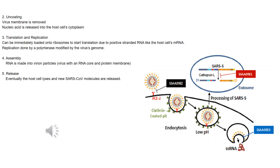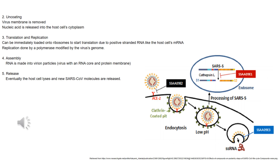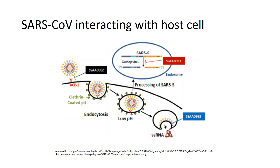The third step, translation and replication, can be carried out immediately due to the virus having positive-stranded RNA, like the host mRNA. The replication itself is performed by a polymerase encoded by the virus. The fourth step, assembly, is when RNA is made into virion particles. Step 5 is release — eventually the host cell breaks apart and the newly formed SARS coronavirus molecules are released. The virus targets the pneumocytes, enterocytes, and endothelial cells in the host's airways.